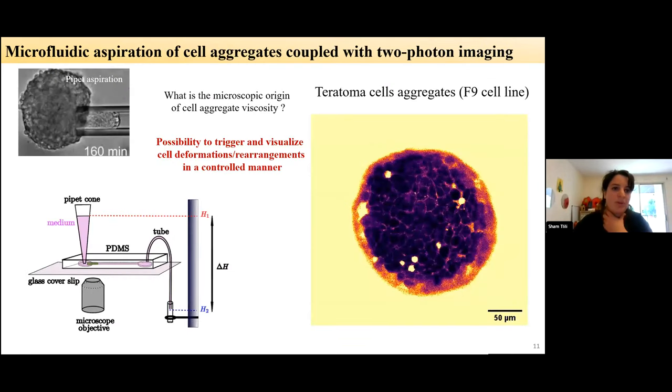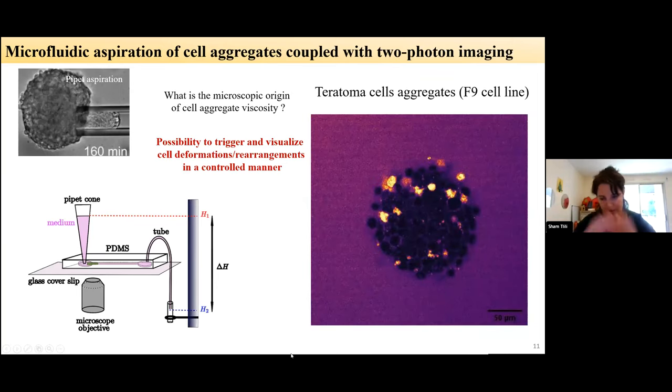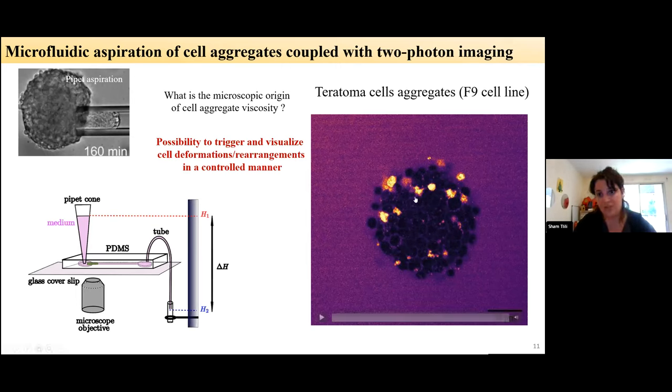So in this work, we tried to take the advantage of the pipette experiment, which is really broadly used in 3D tissue mechanics, but to combine it with live imaging. So as there are 3D tissues, we are going to use 2-photon imaging, but this is also compatible with confocal microscopy with some limitation. And in this work, we use teratoma cell aggregates with the F9 cell line, but this can be used on any spheroids or organoids. The idea is, so here you can see a 2-photon Z-stack of such organoids when they are not stressed. So here we put a dye, 3-photon MNB in the medium, and you can have for free access to the intercellular space and the cell shapes and contours.